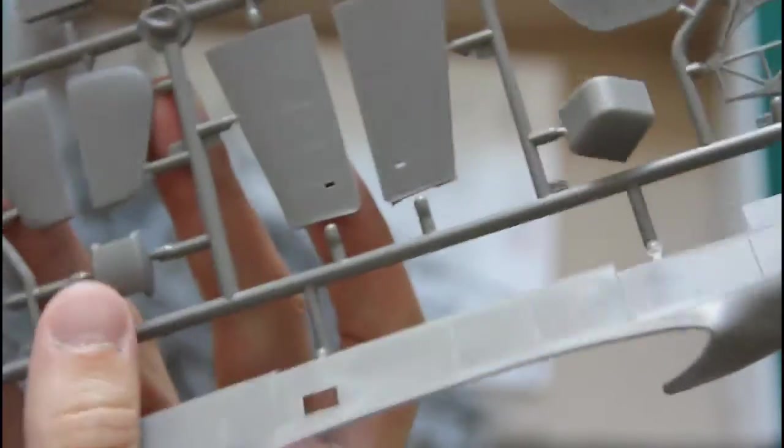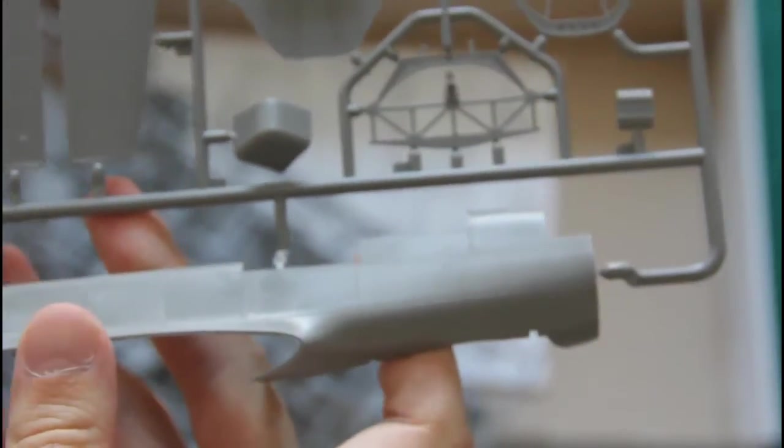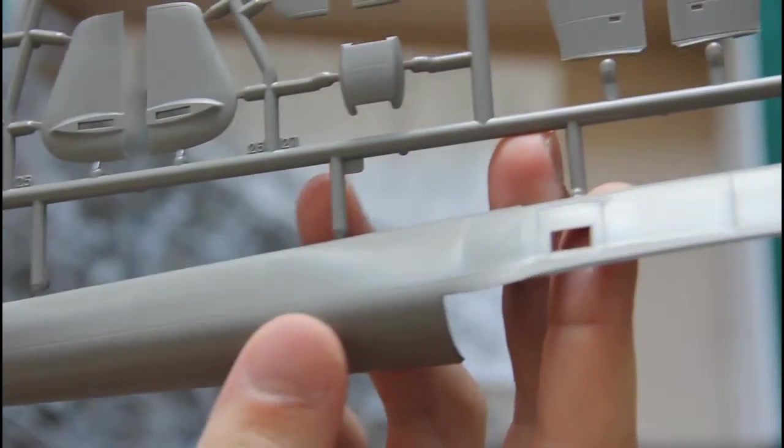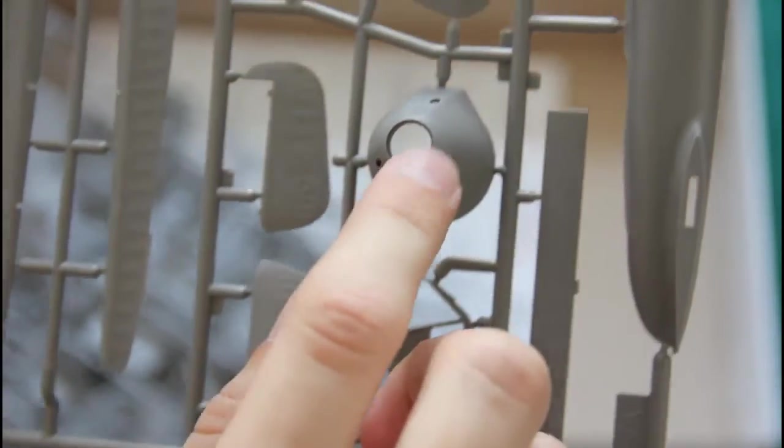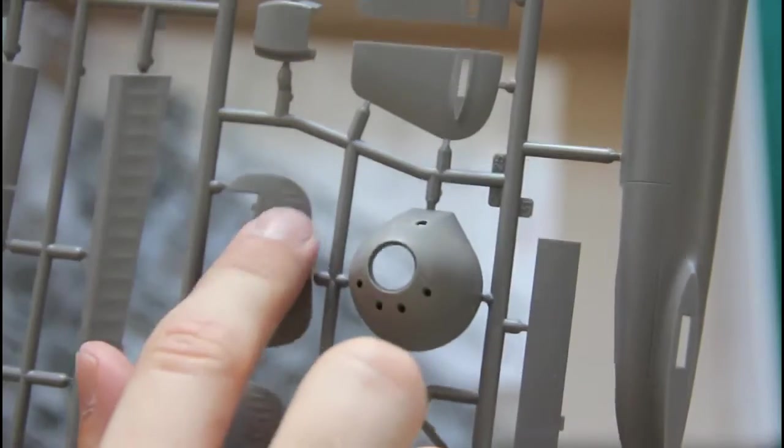Next is a quite huge sprue with big fuselage halves. Here you can see them. On these parts you will find recessed panel lines and riveting in some spots. This is quite an interesting feature. Here you can see the nose part is molded as a one piece element, so you won't have seams on such a sensitive area.